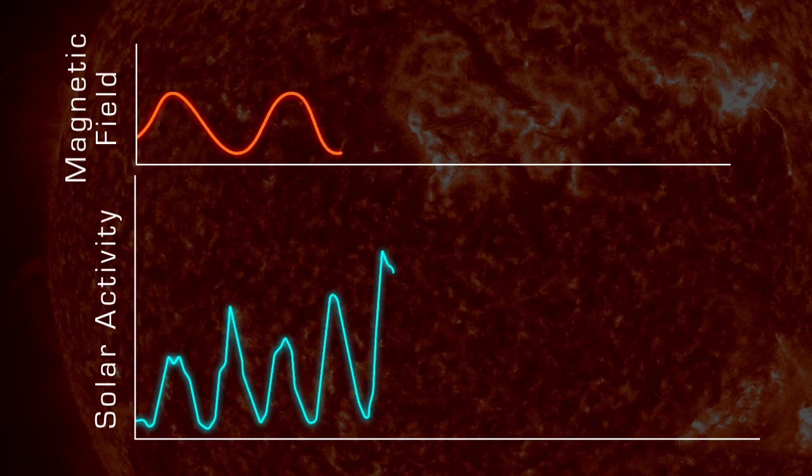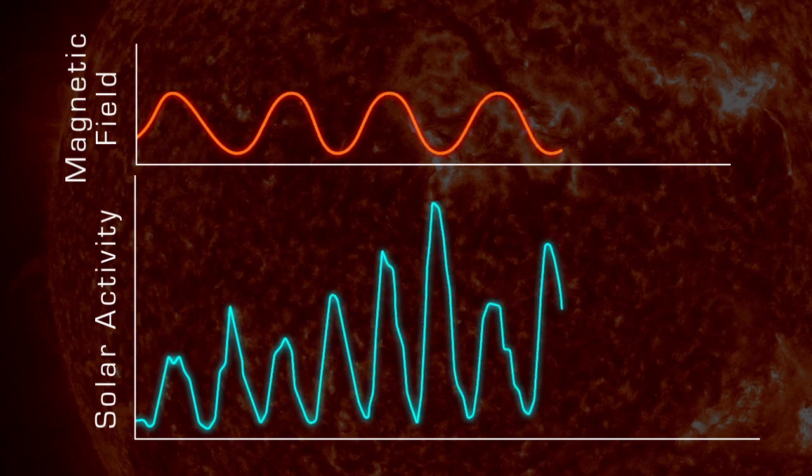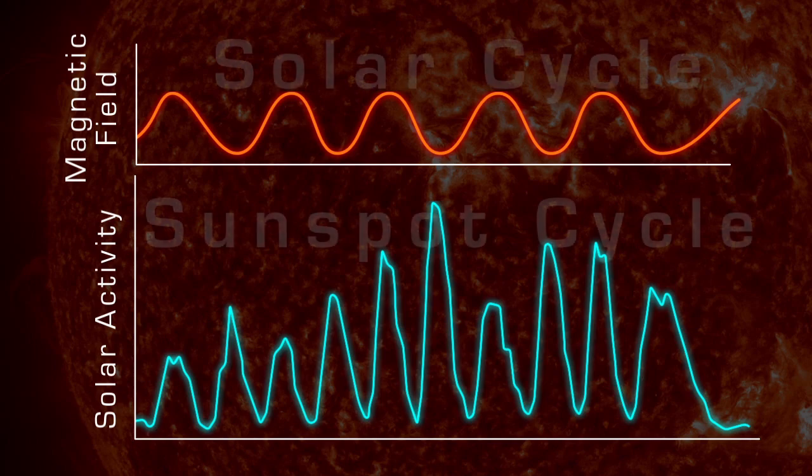The Sun's 11-year cycle is a symptom of a longer 22-year cycle called the solar cycle, or hail cycle, which affects the Sun's magnetic fields.